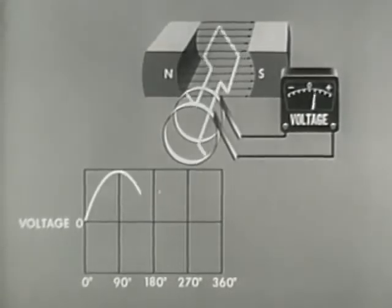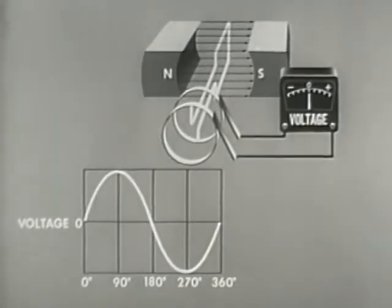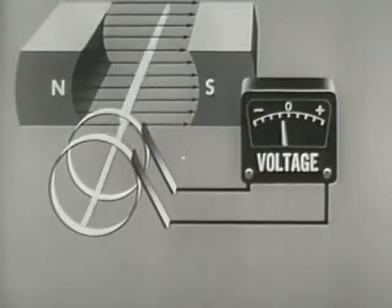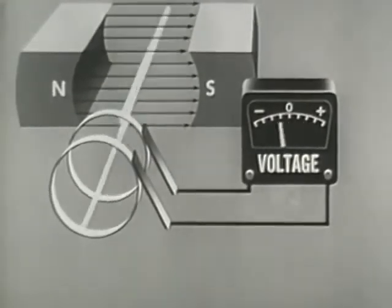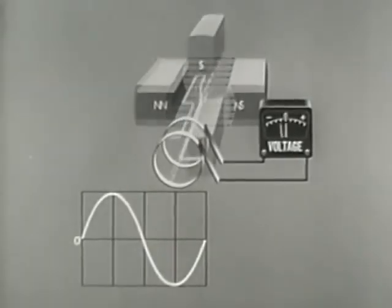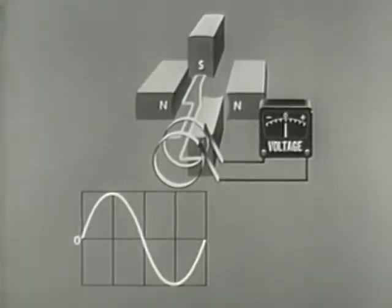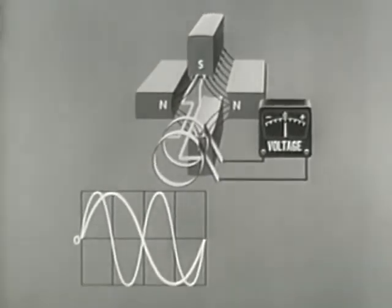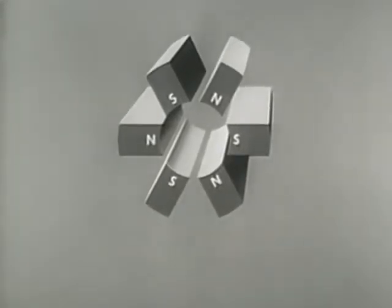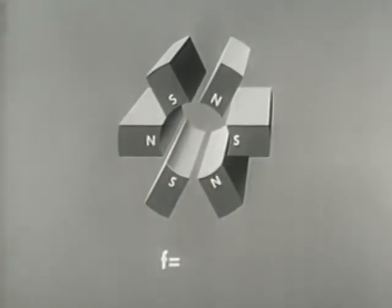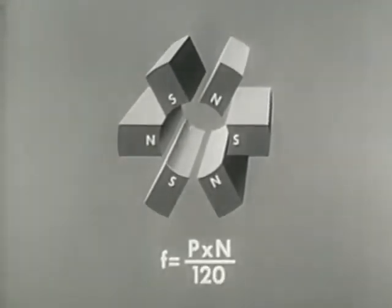To summarize: all rotating generators produce AC internally. The AC character of the output is maintained in the AC generator by the use of slip rings as load connectors. The frequency of the AC generator can be changed by introducing additional magnetic fields. The formula for frequency can be expressed as: F, or frequency in cycles per second, equals P, the number of poles, times N, revolutions per minute, over 120.